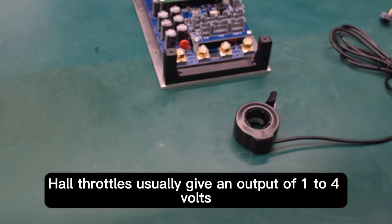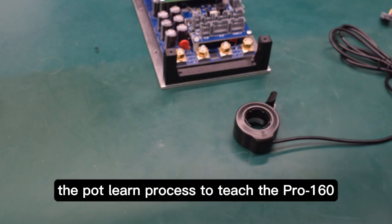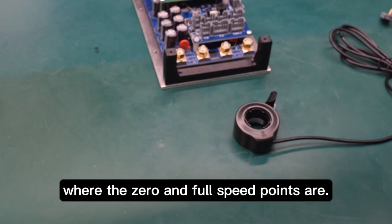Hall throttles usually give an output of 1 to 4V which means that you will need to go through the pot learn process to teach the Pro 160 where the zero and full speed points are.